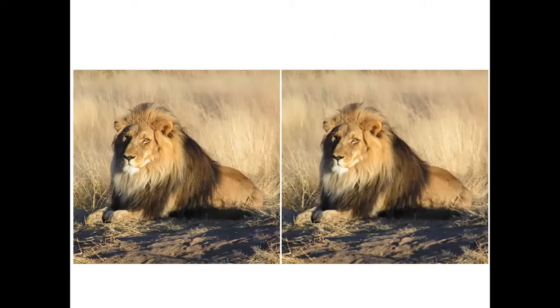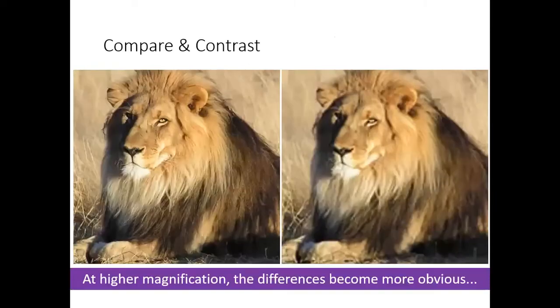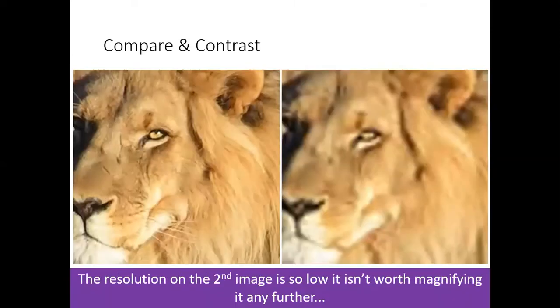If I zoom in it will become much more obvious. The image on the right is starting to lose definition — you can't see much of the detail of the lion. If we zoom in again it's even more obvious.